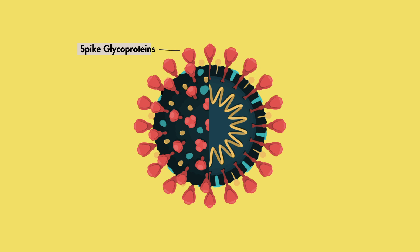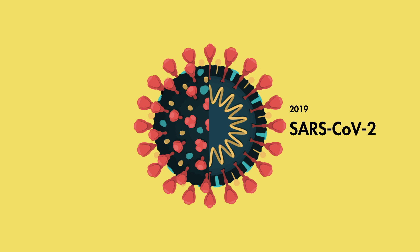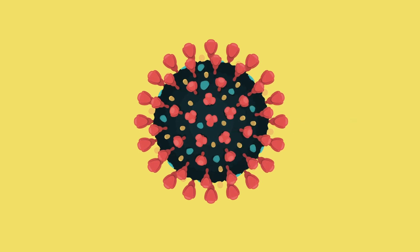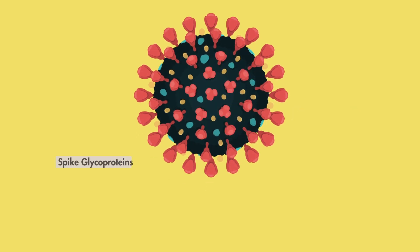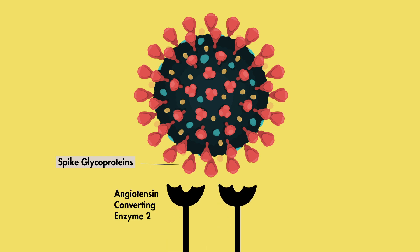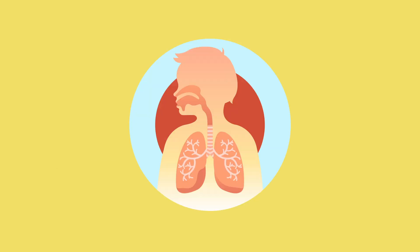For example, in 2019 a novel coronavirus emerged that we called SARS-CoV-2. The spike glycoproteins on these coronaviruses bind to receptors on the human cell surface called angiotensin-converting enzyme 2, or ACE2 for short. These ACE2 receptors can be found in the human respiratory tract, which explains why SARS-CoV-2 leads to respiratory symptoms like cough and trouble breathing.